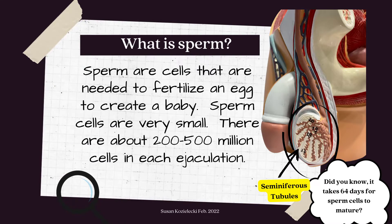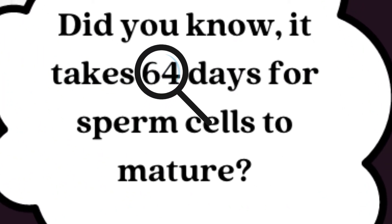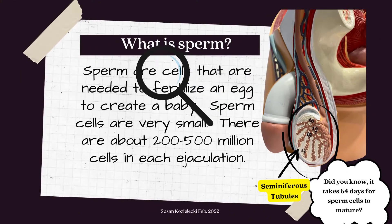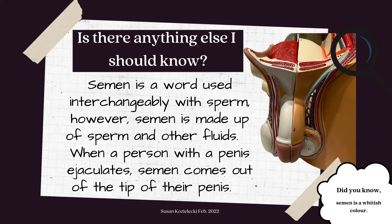What is sperm? Sperm cells are what are needed to fertilize an egg to create a baby. Sperm cells are very small — there are about 200 to 500 million cells in each ejaculation. Did you know it takes 64 days for sperm cells to mature? That's what's happening as they're traveling through the seminiferous tubules.